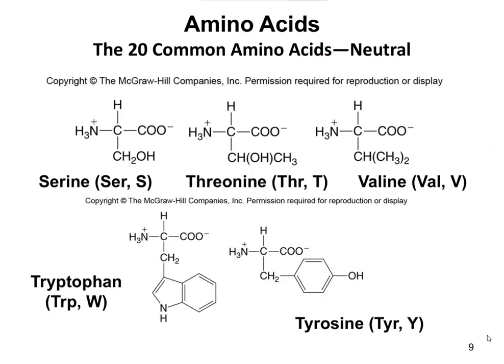The remaining neutral amino acids are serine, threonine, valine, tryptophan, and tyrosine. Serine, threonine, and tyrosine are all alcohols with an OH group. Valine and tryptophan have non-polar side chains. Although tryptophan has an NH group, because of the benzene ring present, that NH doesn't behave like a typical amine.